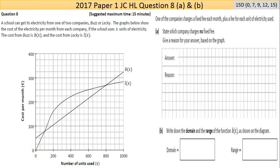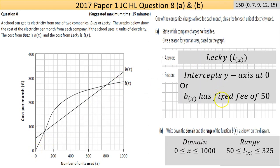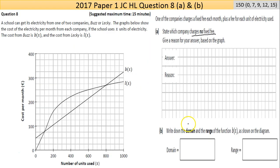Whereas with Lecky, if you don't use no power you'd have no bill. State which company charges no fixed fee. Give a reason for your answer based on the graph. The answer should be Lecky. The reason is that their graph starts from the origin, the y-axis is zero, showing that B(x) has a fixed fee of 50.